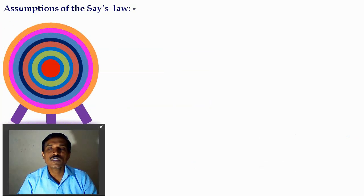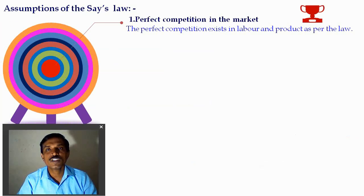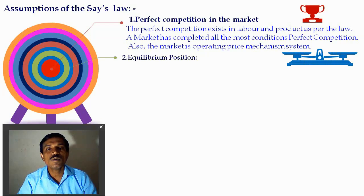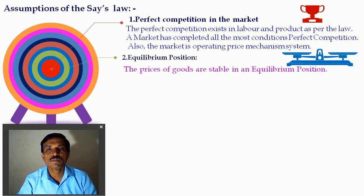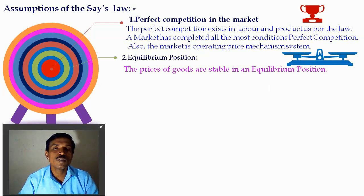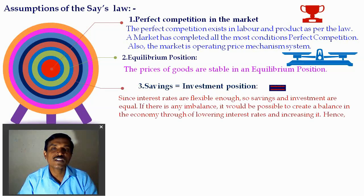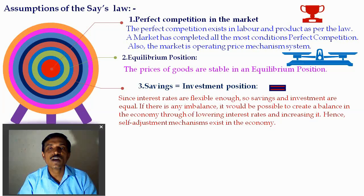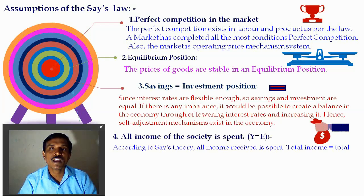The assumptions of Say's Law of Market include perfect competition — a large number of buyers and sellers, homogeneous goods, and absence of total cost. The equilibrium position is also mentioned in his theory; the price of goods is stable at equilibrium according to J.B. Say. According to J.B. Say, saving and investment are equal because the rate of interest determines both: a higher rate of interest leads to higher saving, a lower rate leads to lower saving. Conversely, a lower rate of interest leads to higher investment, and a higher rate to lower investment. So the rate of interest creates equilibrium between saving and investment.